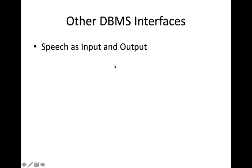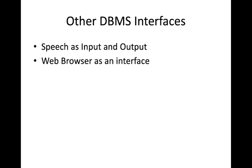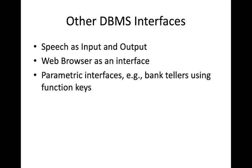Other interfaces include speech input and output — for example, saying 'retrieve student information' or 'find all mobiles less than 10,000 rupees,' with output also delivered in speech format. Web browsers serve as interfaces, which we already use in daily life. There are also parametric interfaces used by bank tellers — shortcut function keys like F4 or F7 are used to perform specific operations such as updating an account.